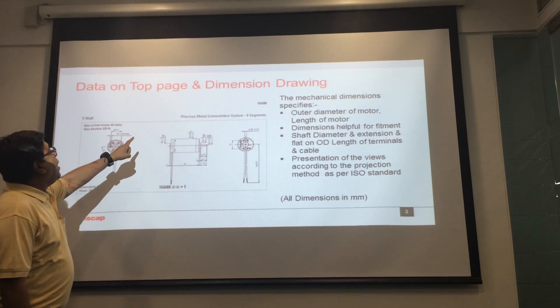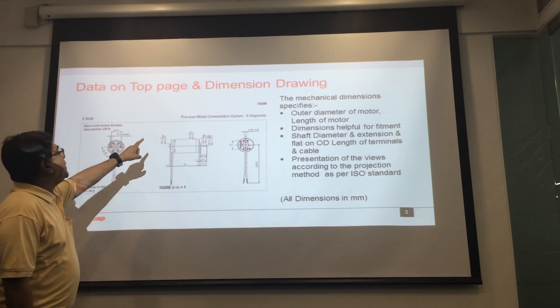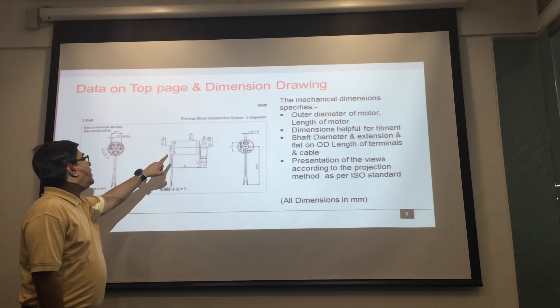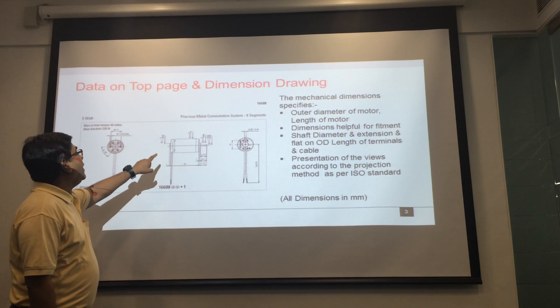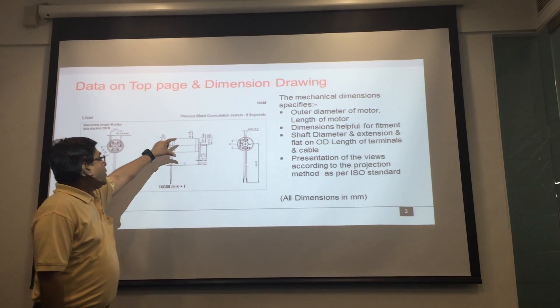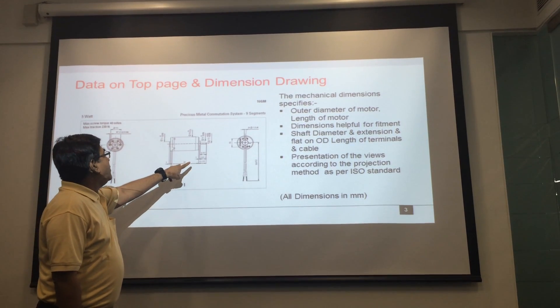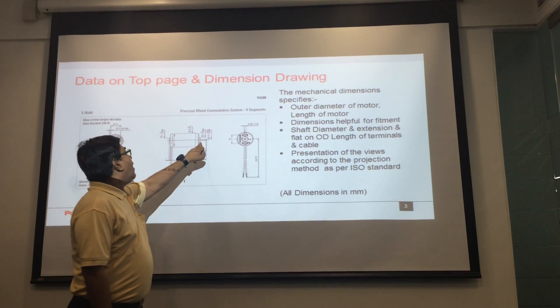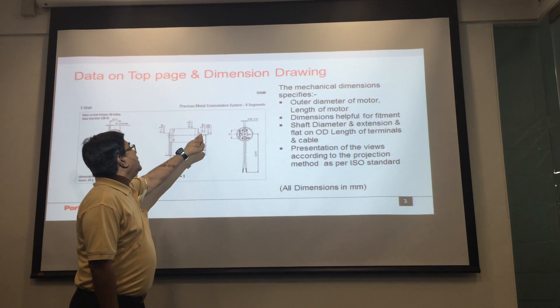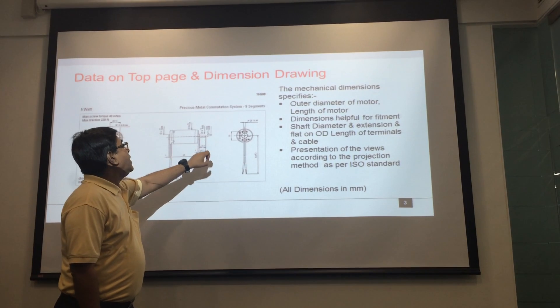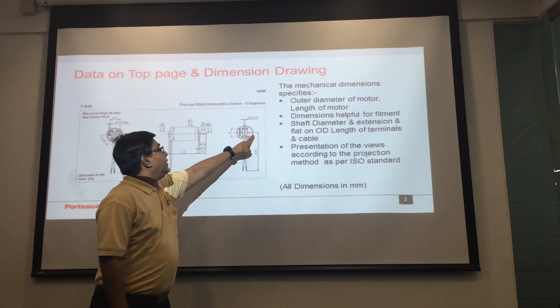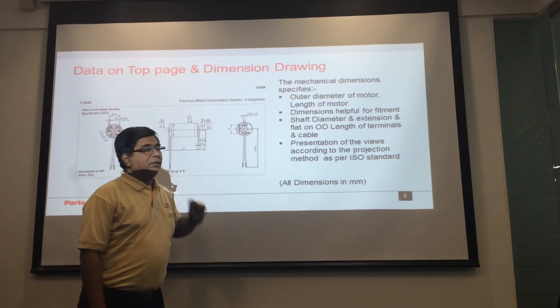The outer dimension section specifies the mechanical dimensions like outer diameter, total length of the motor, shaft extension, shaft diameter, and the grid length.